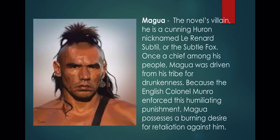Magwa is the novel's villain. He is a cunning Huron named Le Renard Subtil, or the Subtle Fox. Once a chief among his people, Magwa was driven from his tribe for drunkenness. Because the English Colonel Monroe enforced this humiliating punishment, Magwa possesses a burning desire for retaliation against him.